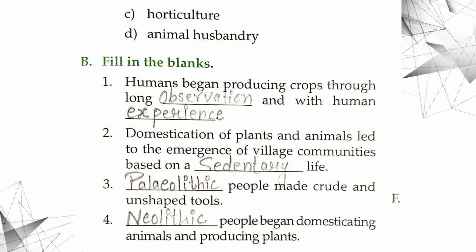Next is domestication of plants and animals led to the emergence of village communities based on a sedentary life. Sedentary life, S-E-D-E-N-T-A-R-Y, sedentary. It means a kind of settled life.